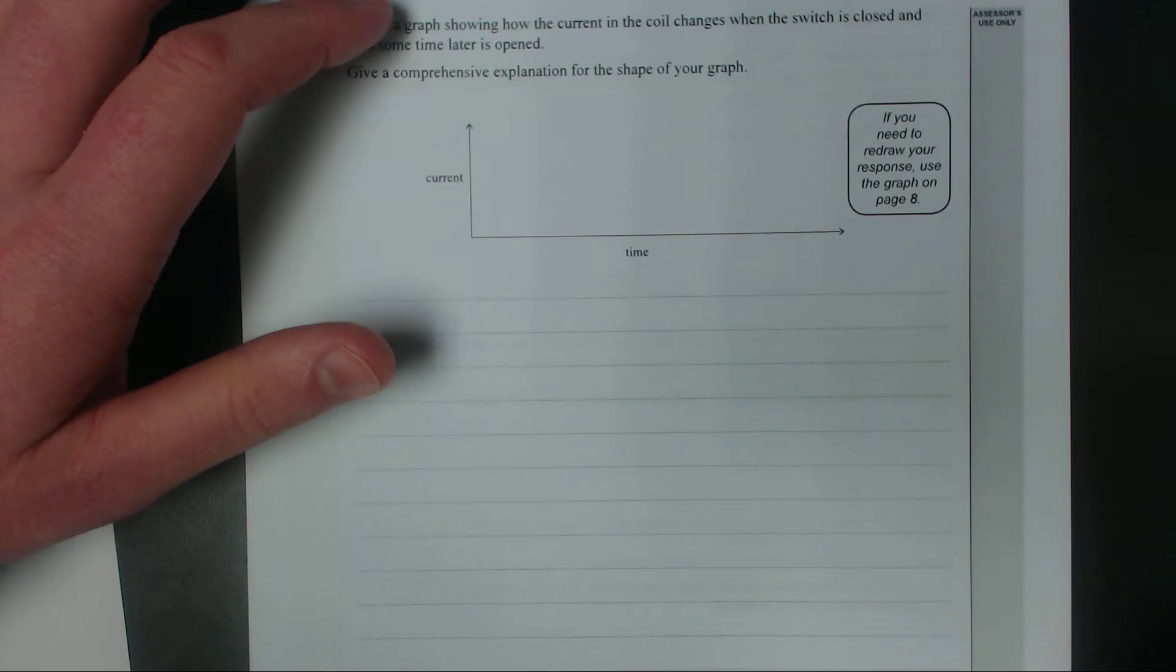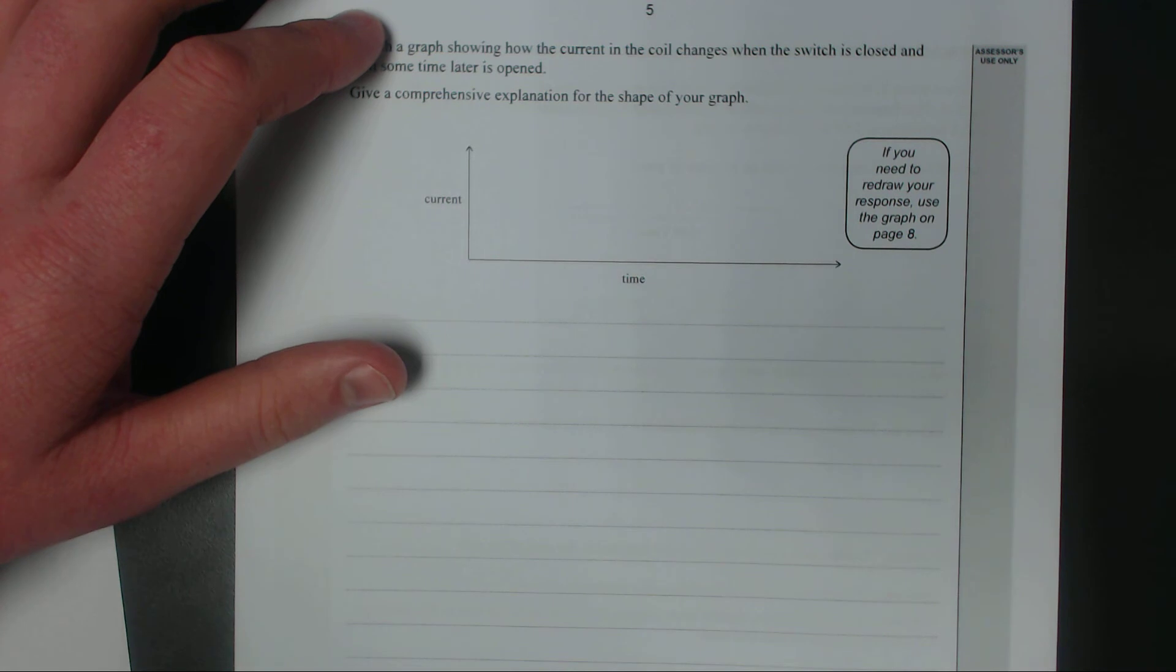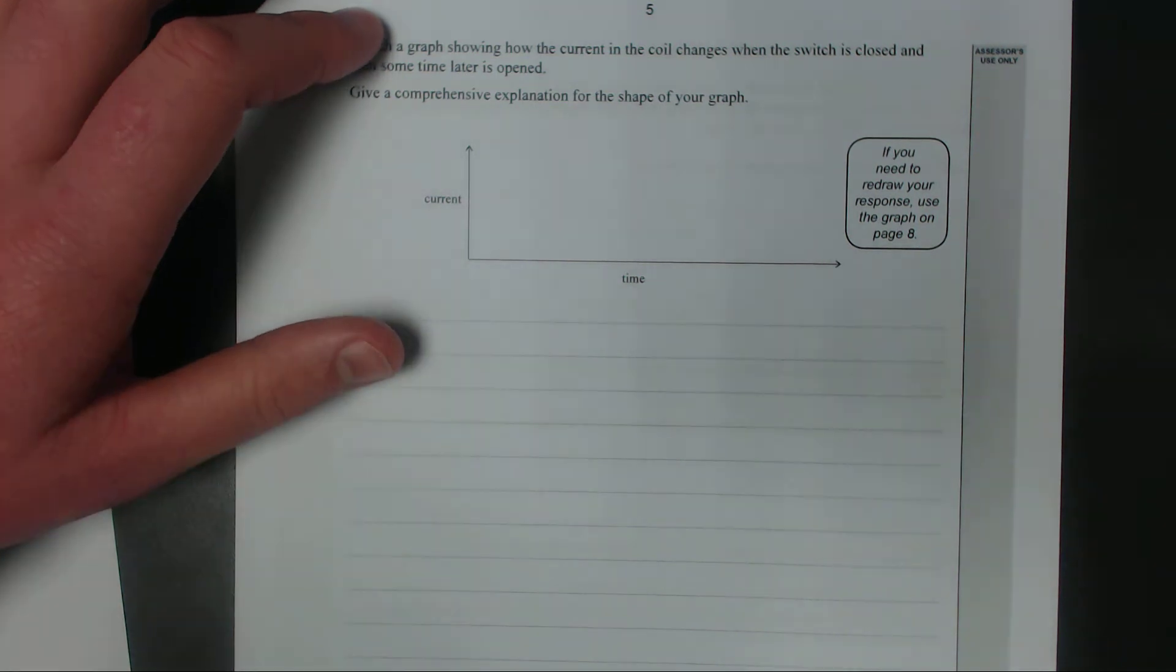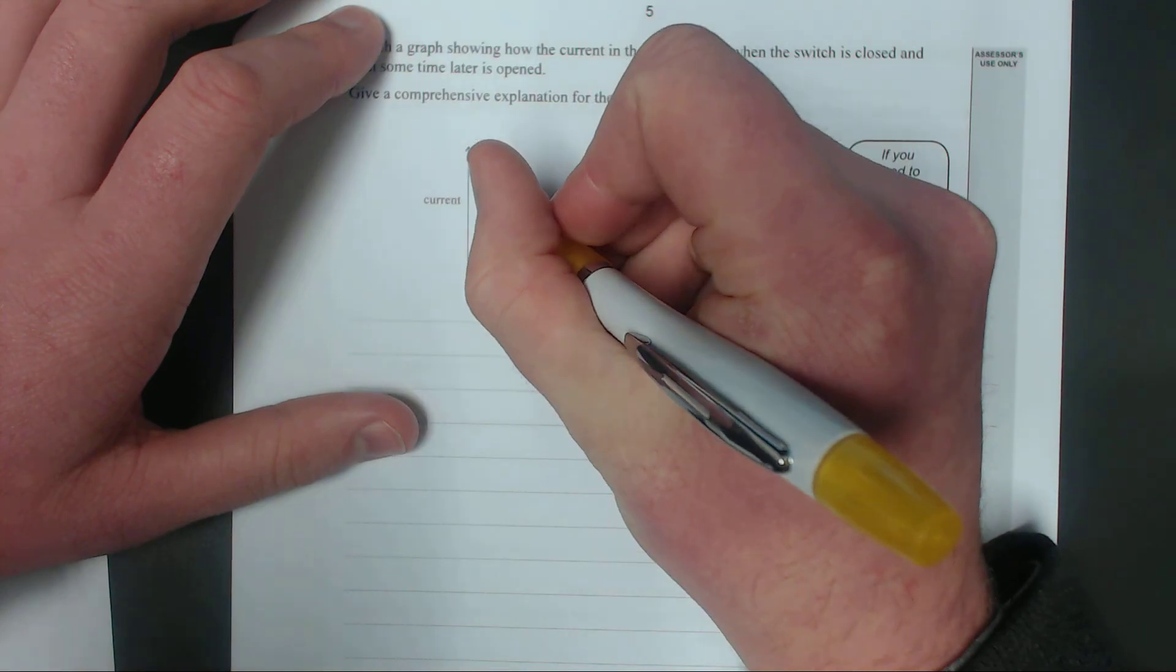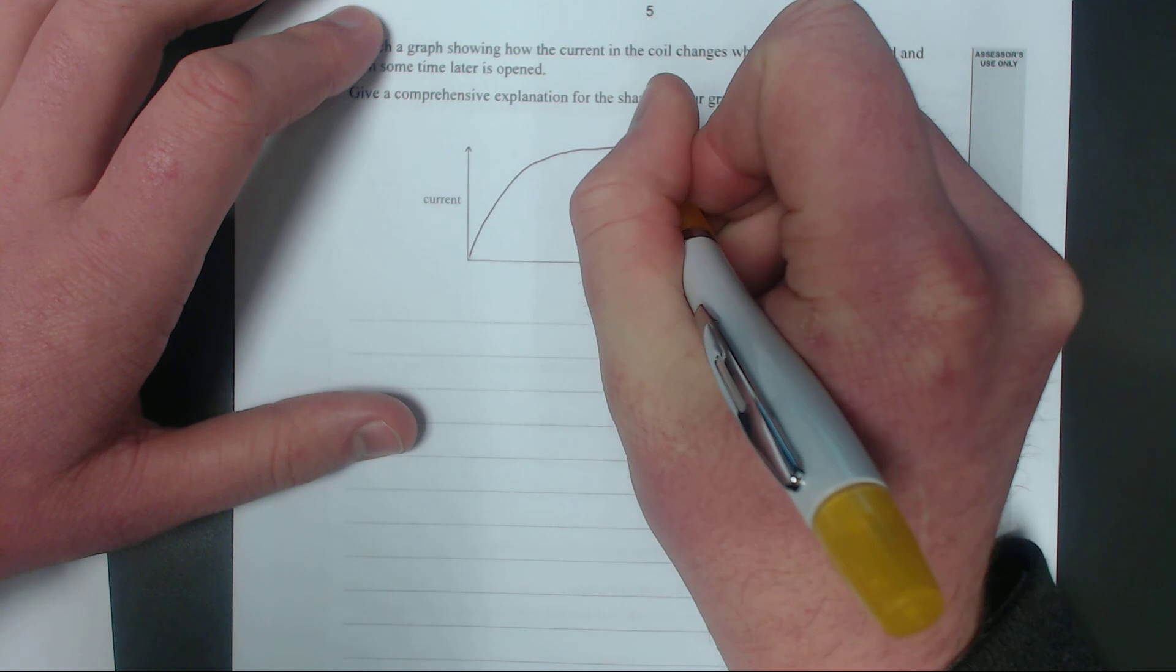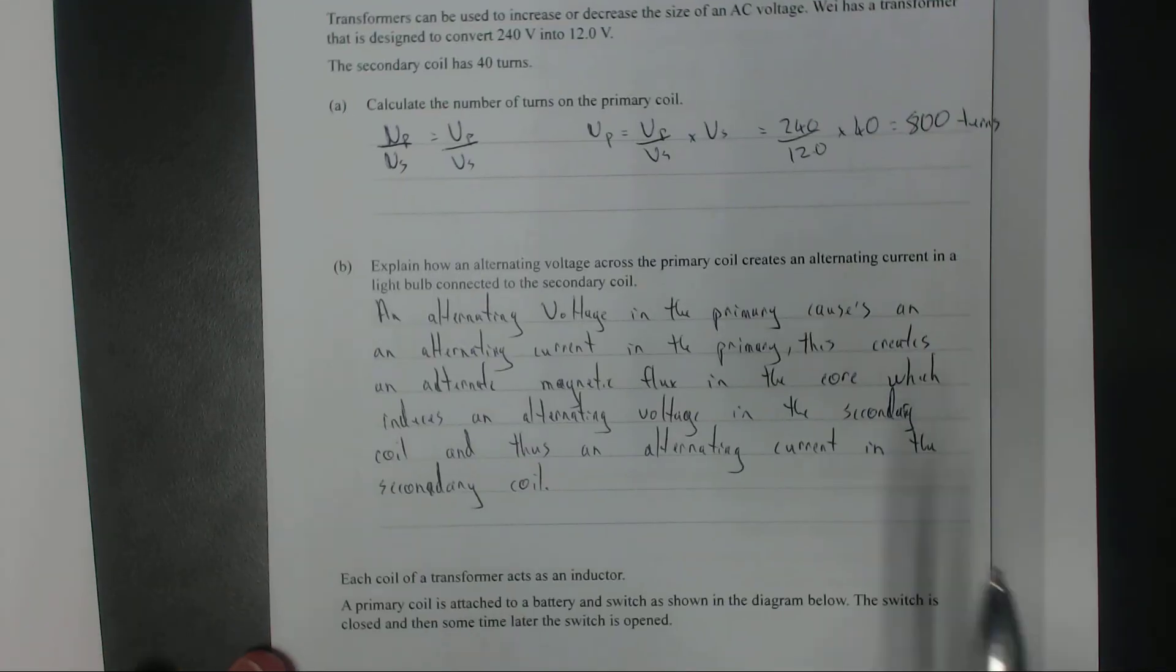Because you've got an inductor there, when you flip the switch that generates a magnetic field which generates a back EMF which opposes the voltage. EMF is just a voltage. It creates a voltage which opposes the voltage applied, which then reduces how much current can actually flow. And then as the changing magnetic field gets less and less, the induced back EMF gets less and less. Eventually your current just equals the supply current. So the graph looks something like this to begin with, and then it just reaches its max current.